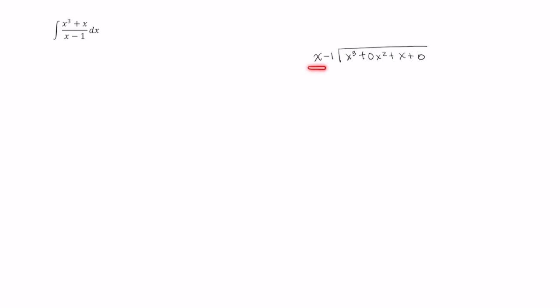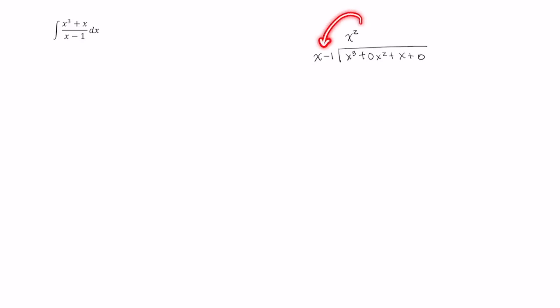Now that that is done, ask yourself: what do I need to multiply by x to obtain x cubed? If you said x squared, you're correct. Multiplying x squared times x gives me an x cubed, which I was already expecting. And then I need to multiply x squared by negative one to get a negative x squared.